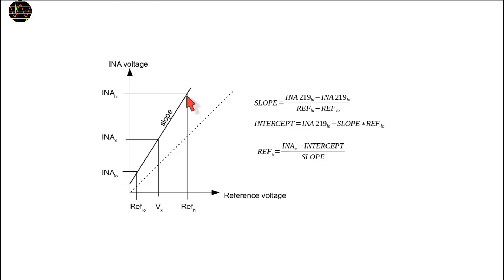Using these four values you can then calculate a slope and an intercept value which become the calibration data. With these two values and that formula here, you can then correct the measured INAx value to become refx.